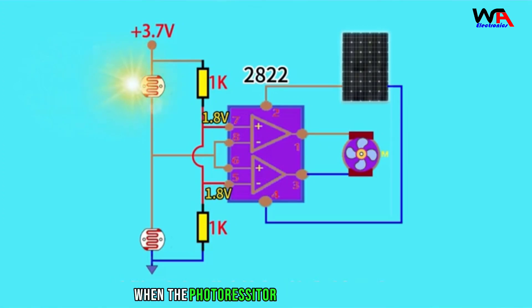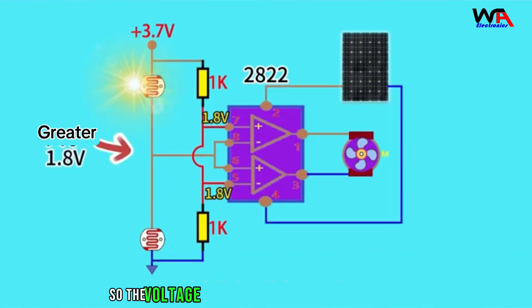In this way, when the photoresistor above receives light, its resistance will be smaller than the resistance below LDR, so the voltage at that point will be greater than 1.8 volts.